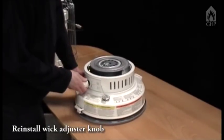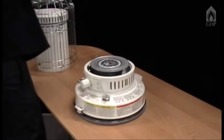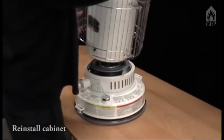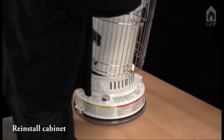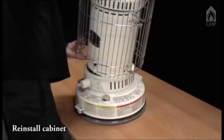Replace the wick adjustment knob. Replace the heater cabinet, make certain the grill guard prongs are inserted securely into the proper holes on the heater, and the front cabinet matches the front of the heater.